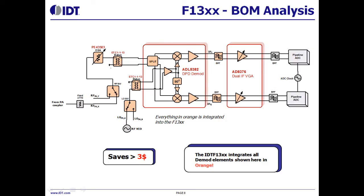The IDT-F30 series replaces a discrete DPD demodulator consisting of dual IF VGA, 2 BPF, RF DSA, 2 baluns, and 2 switches — shown in the orange shaded area of this slide. With everything integrated in a single chip, this makes your DPD receiver compact and saves significant cost.